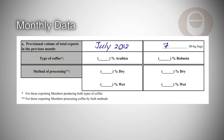Indicate the volume of coffee estimated to have been exported. If your country produces more than one type and processes coffee by more than one method, please provide a breakdown by type of coffee and by method of processing.